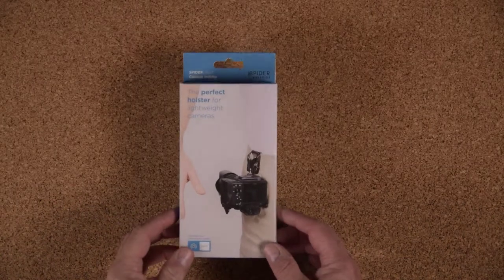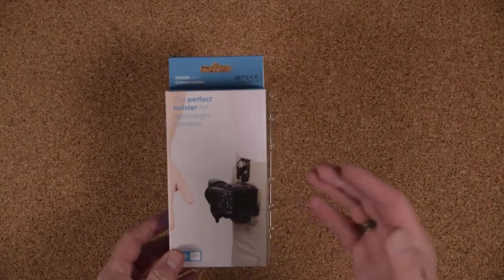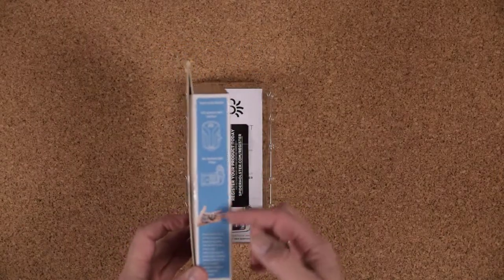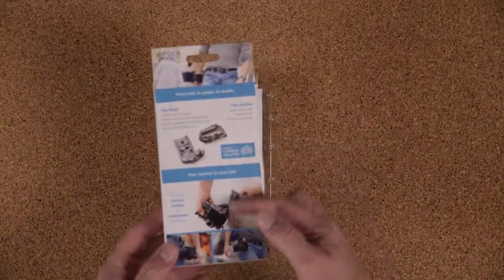Okay, so let's take a look at this Spider Light holster. It comes in a nice little box with simple diagrams showing how it fits onto the cleats and rests on the side of your hip. Straightforward, nice little package, nothing exciting there.